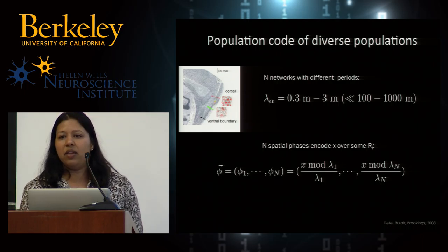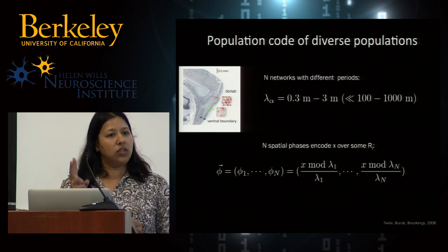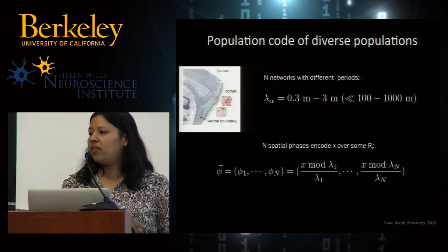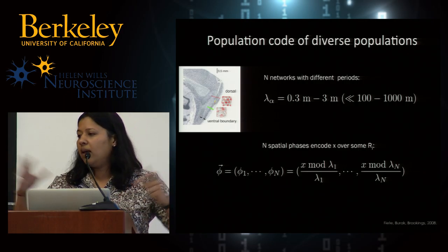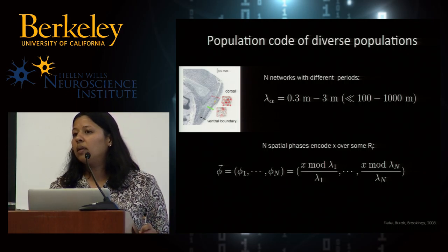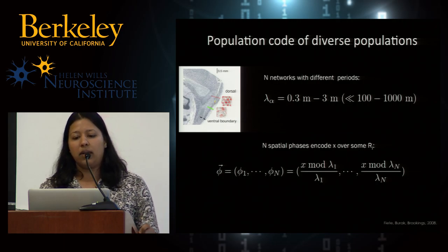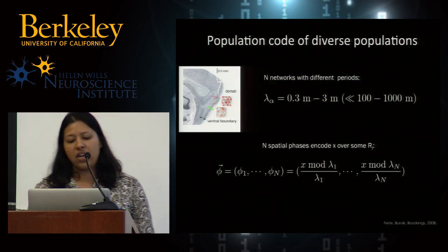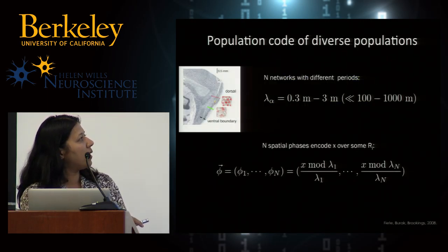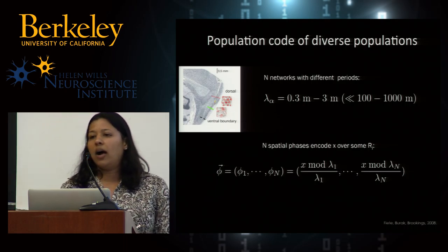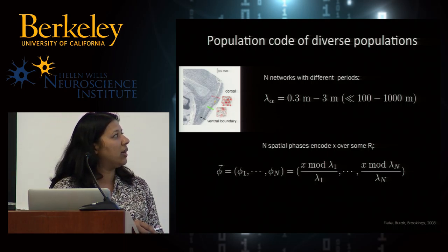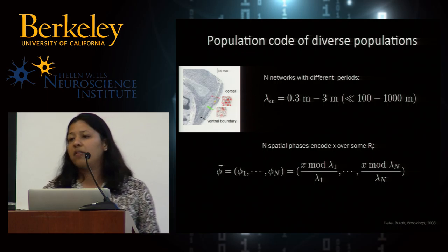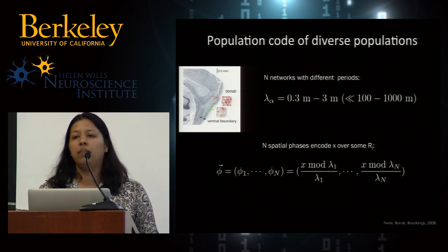This seems really bizarre — you've got a position variable, two scalar quantities, being encoded by these periodic functions that are very non-local and completely periodic. Why would you encode position that way? It turns out that representing a number x by its modulo phases has a name. If x is an integer and lambda is an integer, this is actually a number system called a residue number system in computer science.